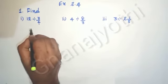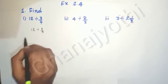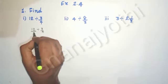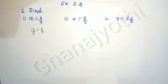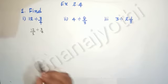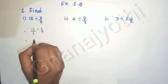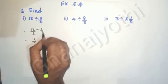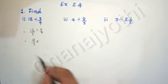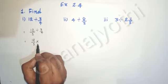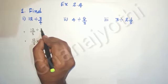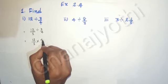So, 12 upon 3/4. Here 12 has no denominator, so we write the denominator as 1. Now we need to divide. If you want to divide, we need to reciprocal the right side. So, 12 upon 1 — when we do reciprocal, the division becomes multiplication. As soon as we write it as multiplication, numerator and denominator interchange their values. So 3/4 will become 4/3.